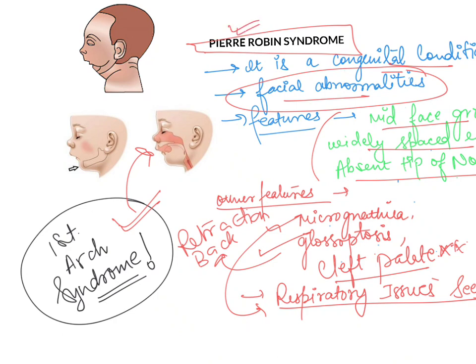To summarize, Pierre Robin Syndrome involves facial abnormalities happening because the first pharyngeal arch is not formed properly, and these are the features which can be seen in the patient. I hope this video was useful — please like and share it with your friends.